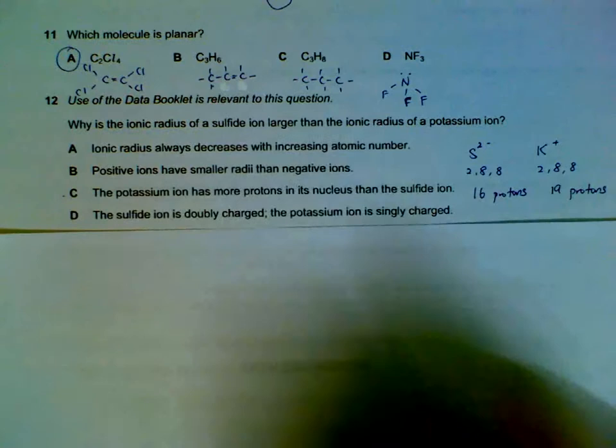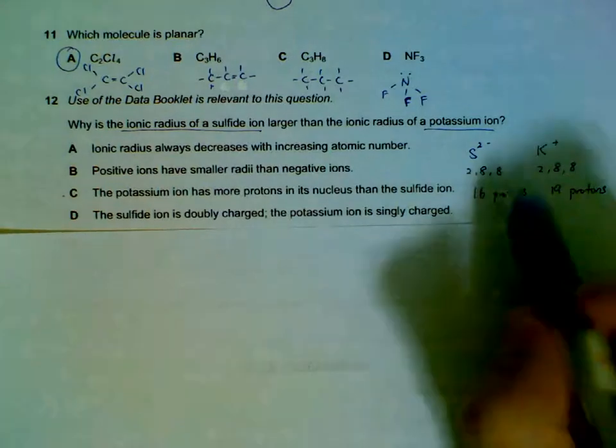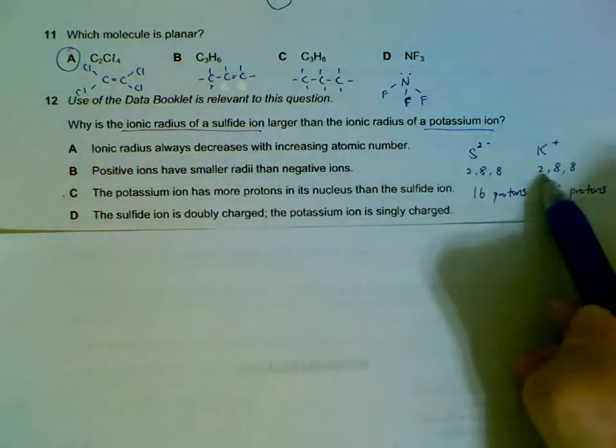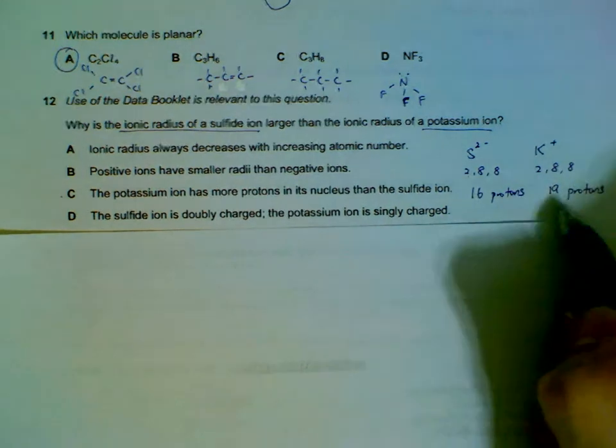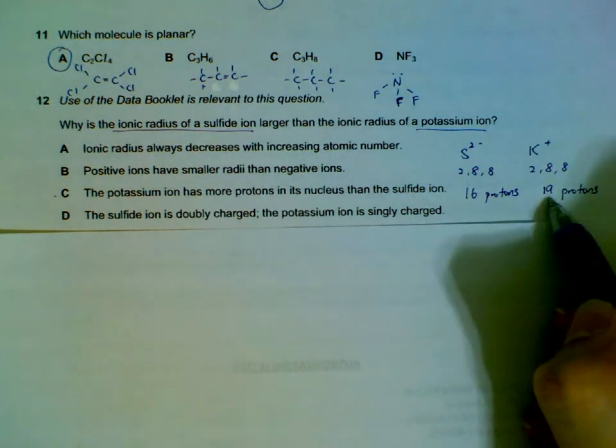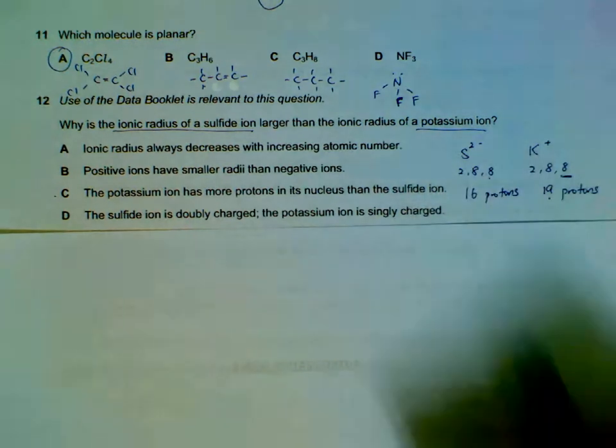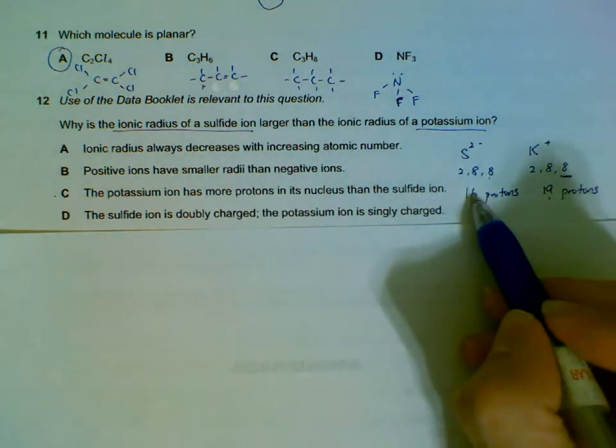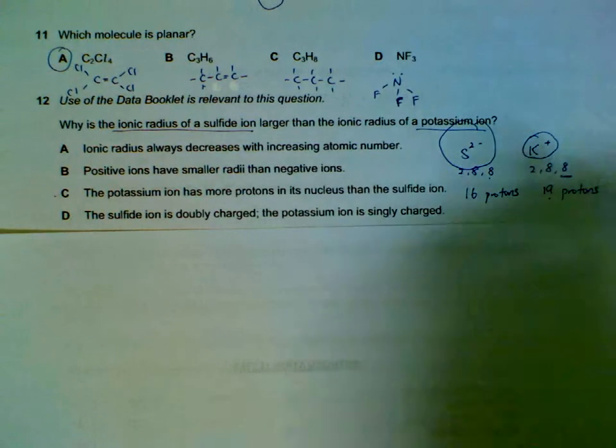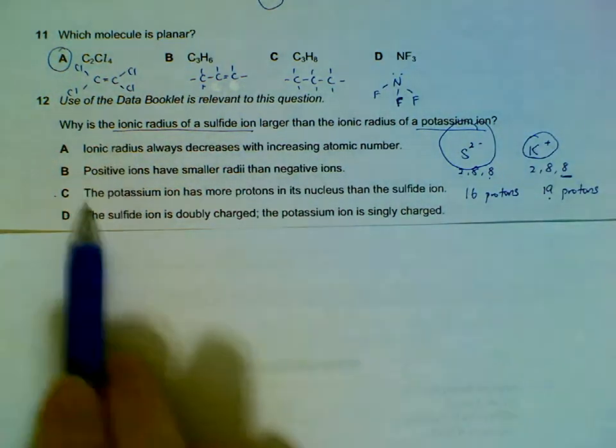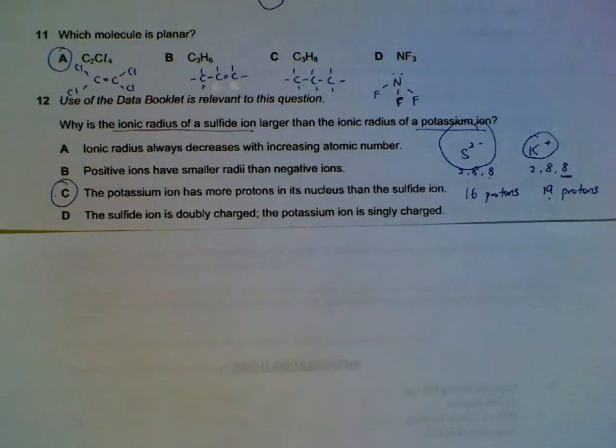Number 12: ionic radius of sulfide. Why is it larger than potassium? So we do a quick comparison. Based on electrons, they have the same number of electrons. So same number of shells: 2, 8, 8. But potassium has more protons, so it will be able to pull the outer ring closer to itself compared to sulfur, because of the lower attraction with less protons. So that's why sulfur is larger. Potassium, with more protons, will pull the outer ring closer. So the potassium ion has more protons in the nucleus than the sulfide ion. That's why the ion for potassium is smaller.